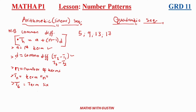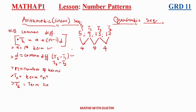Term one is 5, term two is 9, term three is 13, term four is 17. The differences: 9 minus 5 equals 4, 13 minus 9 equals 4, and 17 minus 13 equals 4. We have a constant difference, so this is a linear pattern.